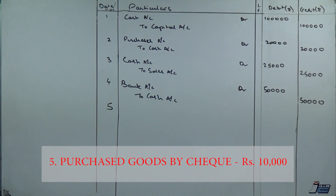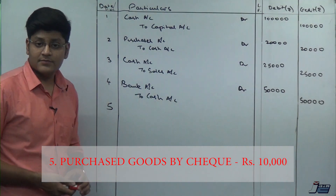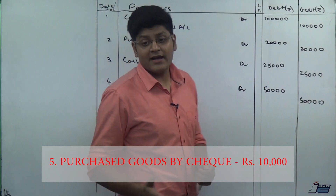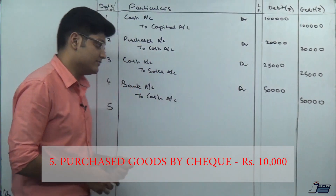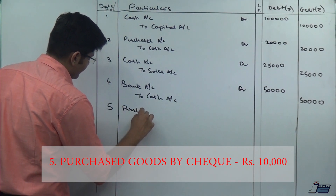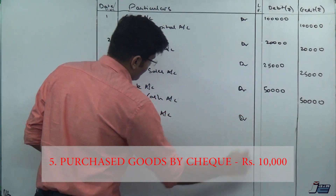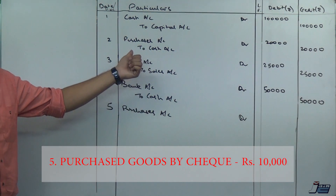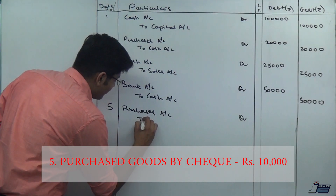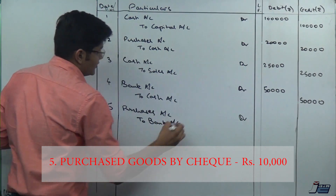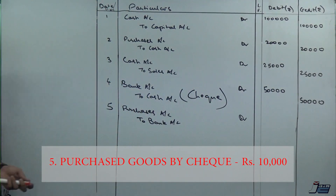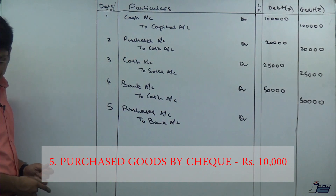Entry number five: purchased goods by cheque, rupees 10,000. This time I have a bank account and I make the payment by cheque. So Purchases Account is debited. But this time cash is not going out — my bank account balance will reduce. So: Purchases Account debit to Bank Account. A cheque means payment is made through the bank. Amount is 10,000.